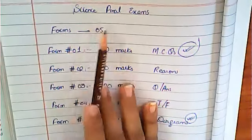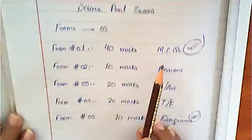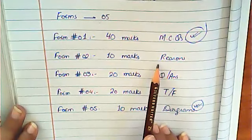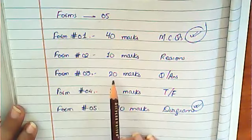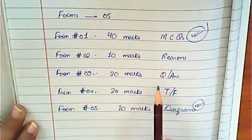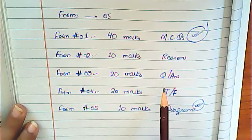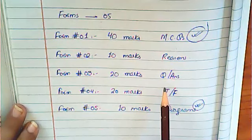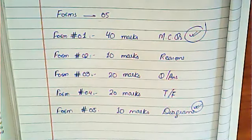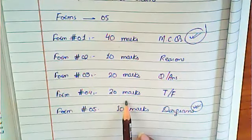Your science final paper will be comprised of five forms. Form number one will be of 40 marks and will carry MCQs. Form number two will be of 10 marks and will carry some important reasons — you have to pick the right reason. Form number three will carry 20 marks and is basically the question-answer section, where I will ask definitions or important terminologies like atomic number, electroplating, or electromagnetism, and you have to pick the correct definition from options.